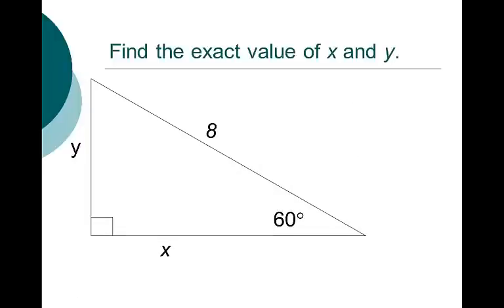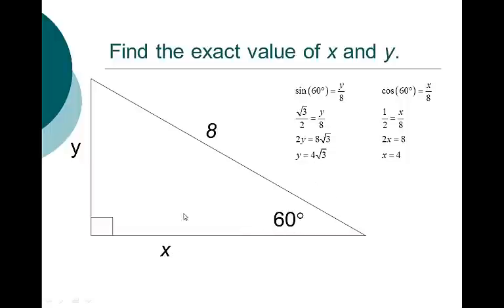Let's do another one — find the exact values of x and y. y and x are the legs; we have a 60 degree angle. So I say sine of 60 is opposite over hypotenuse, y over 8. Sine of 60 is square root of 3 over 2, so I replace it and cross multiply: 2y equals 8 square root of 3, and y equals 4 square root of 3 — that's the exact answer. To find x, I do cosine of 60, which is adjacent over hypotenuse, x over 8. Cosine of 60 is 1/2, cross multiply: 2x equals 8, x equals 4. As long as you know sine, cosine, and tangent of 30, 45, and 60 degrees, it'll be bearable.